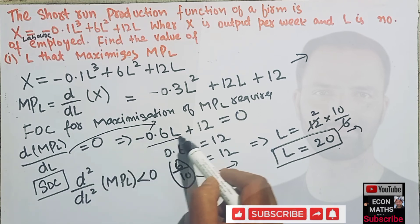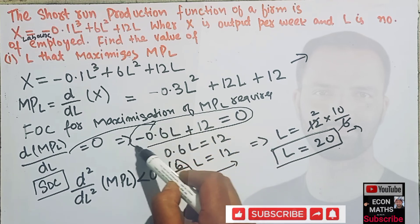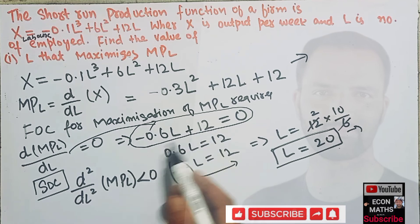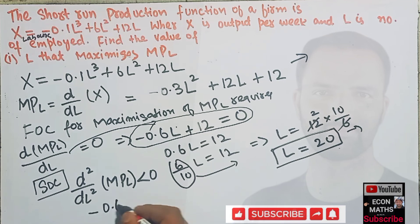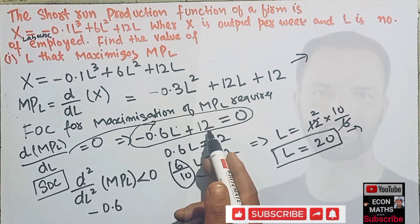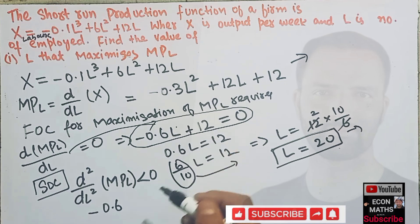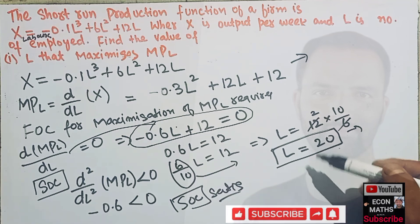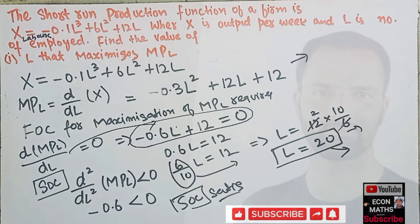We differentiate the first derivative of MPL again with respect to L. The derivative of minus 0.6L is minus 0.6, and the derivative of the constant 12 is zero. Since minus 0.6 is less than zero, the second order condition is satisfied. Therefore, the number of labors that maximizes the marginal product of labor is L equals 20.